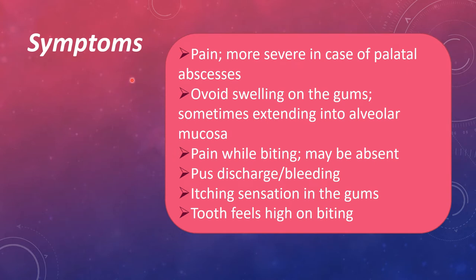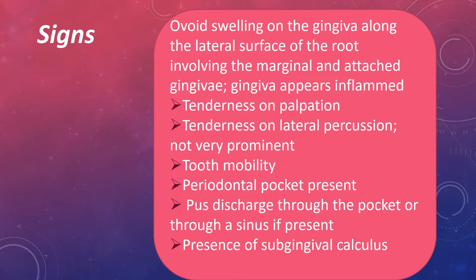The symptoms of periodontal abscess include pain, which is more severe in palatal abscesses compared to other areas, and ovoid swelling on the gums sometimes extending into the alveolar mucosa. Pain while biting may be absent, but pus discharge or bleeding can be seen. Itching sensation in the gums and tooth feeling high on biting are also reported. Clinical signs include ovoid swelling in the gingiva along the lateral surface of the root involving the marginal and attached gingiva, tenderness on palpation, tenderness on lateral percussion, tooth mobility, presence of a periodontal pocket, pus discharge through the pocket or sinus, and presence of subgingival calculus.